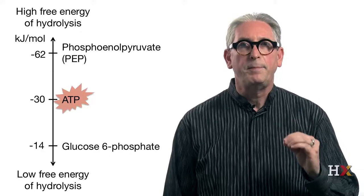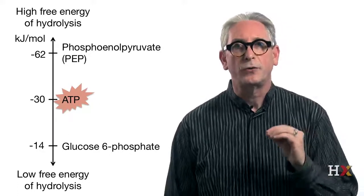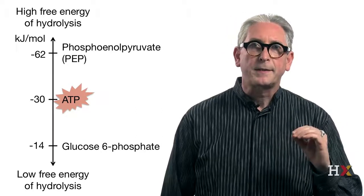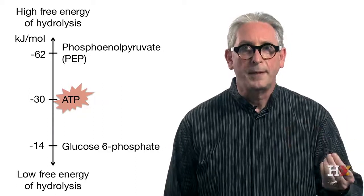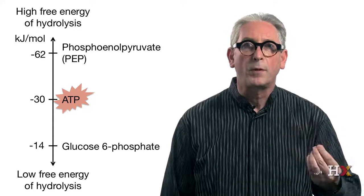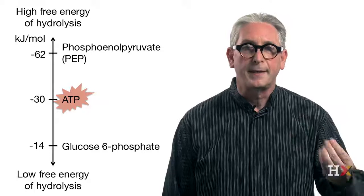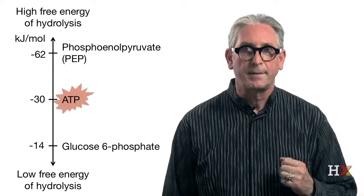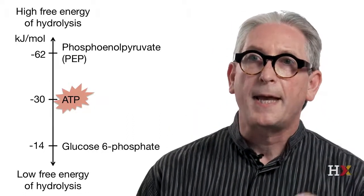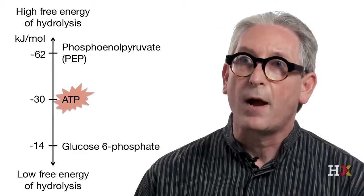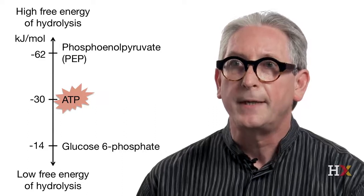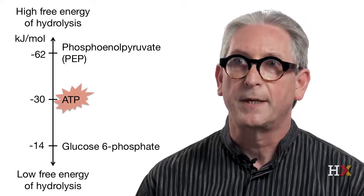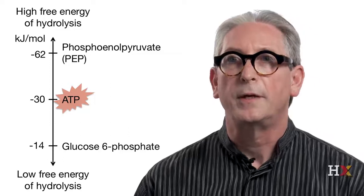In between, we have ATP with minus 30 kJ per mole. This intermediate position of ATP makes the synthesis of ATP from ADP possible when it's coupled with a reaction that is more exergonic than the synthesis of ATP — for example, the hydrolysis of phosphoenolpyruvate during glycolysis. In contrast, many endergonic reactions can be coupled with the hydrolysis of ATP to drive those unfavorable reactions forward, for example the phosphorylation of glucose into glucose 6-phosphate.